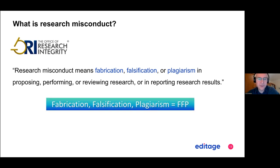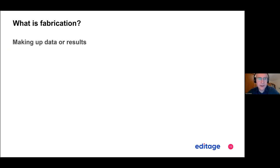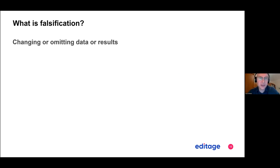Fabrication, falsification, plagiarism — we call that FFP. Fabrication is totally making up data results, whereas falsification is changing or omitting data or results. That's the main difference between those two.